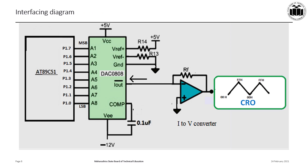The diagram shows DAC0808 interfaced with the microcontroller. As you can see, the 8 digital inputs of the DAC, A1 to A8, are connected to the 8 port pins of Port 1. To generate a triangular wave, Port 1 of the 8051 should be programmed to output digital values from 00H to FFH one after another, so that the analog output voltage of the DAC varies linearly from 0V to 5V. Once the maximum output is reached, Port 1 should output the digital values in decrementing order down to 00H, so that the analog output voltage decreases linearly from 5V to 0V. This cycle should be repeated continuously to generate a continuous triangular waveform.